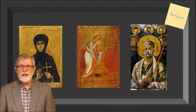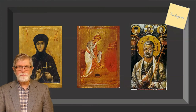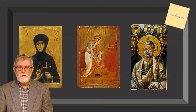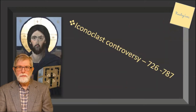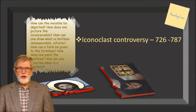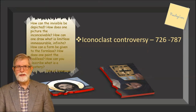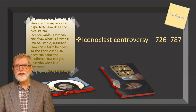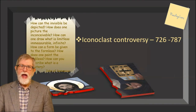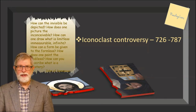The reasoning behind the iconoclastic controversy is well expressed by John of Damascus. He writes: How can the invisible be depicted? How does one picture the inconceivable? How can one draw what is limitless, immeasurable, infinite? How can a form be given to the formless? How does one paint the bodiless?